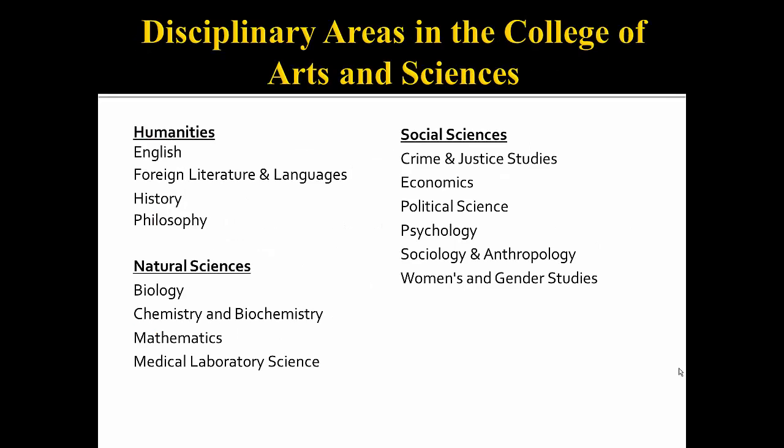In the College of Arts and Sciences, we categorize our field of study into disciplinary areas and then break them down into disciplinary fields, which we also call departments or programs — or in other words, the majors that you have chosen or may choose. These broader areas and the specific departments that fall under them are listed on this slide.